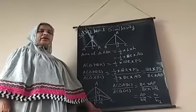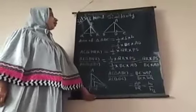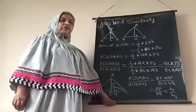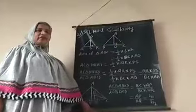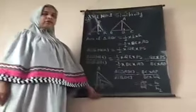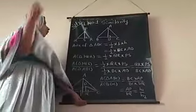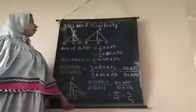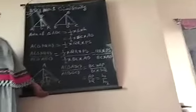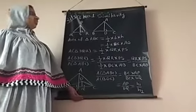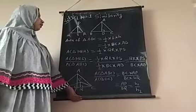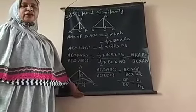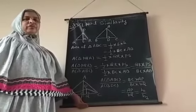I am going to start lesson number 1: Similarity. Similarity means similar figures. Similar figures are those figures which are looking exactly the same — shapes are same but sizes are different. For example, in these two figures, triangle PQR and triangle ABC, these two triangles are similar, because their shapes are same but the size is different. That is, the angles are congruent and the sides are proportional. So, such figures are said to be similar figures.